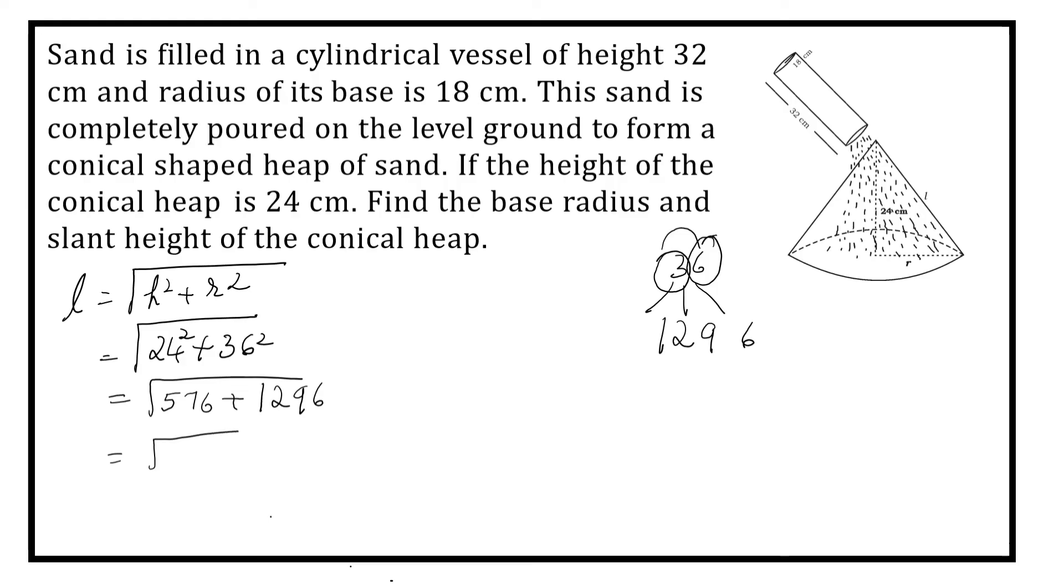Then you have to add these 2. 6 plus 6, last number is 12. 7 plus 1, 8. 8 plus 9, 17. Carry 1. 5 plus 3, 8. Now you know that it is not a perfect square. In order to find the square root of this number, you have to follow division method.